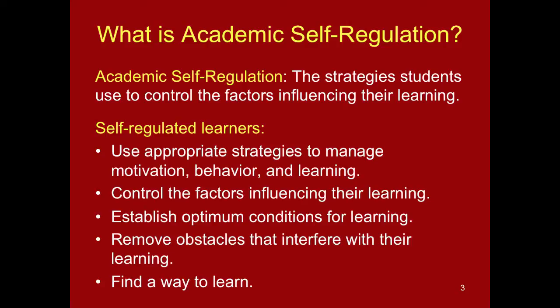Self-regulated learners use appropriate strategies to manage motivation, behavior, and learning. This implies that there is a toolbox full of different strategies, and that students not only make a choice, but make an appropriate choice as to which strategies to use when studying for different tasks or preparing for different assessments. They control the factors influencing their learning and establish optimum conditions for learning — not only environmental factors, but also cognitive and emotional factors. Obstacles are removed that interfere with learning, and basically students will find a way to learn. This implies a focus on mastery of whatever learning is taking place, and that different strategies and restructuring will be used to remove these obstacles. Finding a way to learn implies that learning is important, that the student has self-motivation, and is able to continually re-motivate themselves to achieve the end goal of learning.